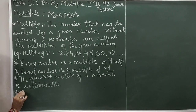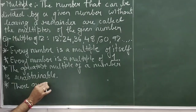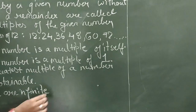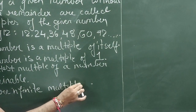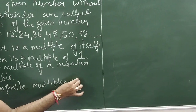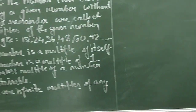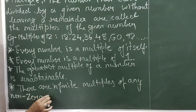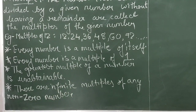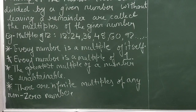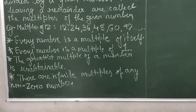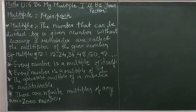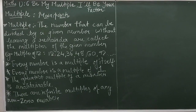Next main point: There are infinite multiples of any non-zero number. That means, apart from zero, if we look at the multiples of any number, they are infinite — they have no end. These are the main points which you are supposed to write down in your notebook regarding multiples.